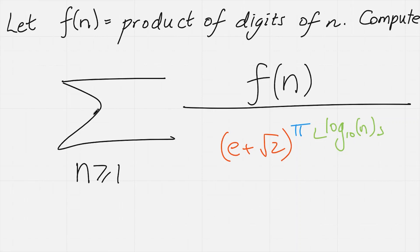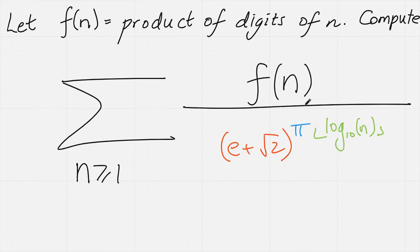Hi, thanks for joining me. Today I've got this really bizarre looking infinite series problem. We want to work out the sum from n equals 1 to infinity of f divided by e plus root 2 to the power of pi times the floor of log base 10 of n. Here f is simply the product of the digits of n when written in base 10. We're supposed to work out what this is as a value, despite it having an e, a root 2, a pi, a floor function, a logarithm base 10, this bizarre function f of n, and the fact that it's an infinite series.